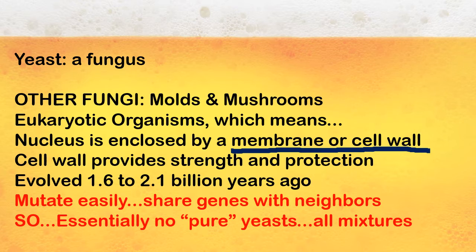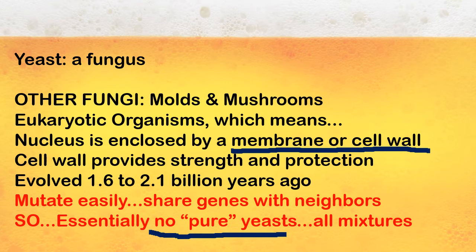Yeast evolved two billion or so years ago. One thing that's different about yeast than a lot of other things that live on Earth is that they mutate very easily. They share genes with their neighbors — essentially, if they bump into the yeast that's next to them, they're sharing some DNA information. You can imagine if human beings did this, if every time you bumped into somebody some of your DNA was exchanged, you could envision that maybe the world would be one big melting pot. But it doesn't work that way for fungi either. What it does mean is that there are no pure yeast — every yeast that's out there is a mixture, but there are still many, many varieties of yeast.